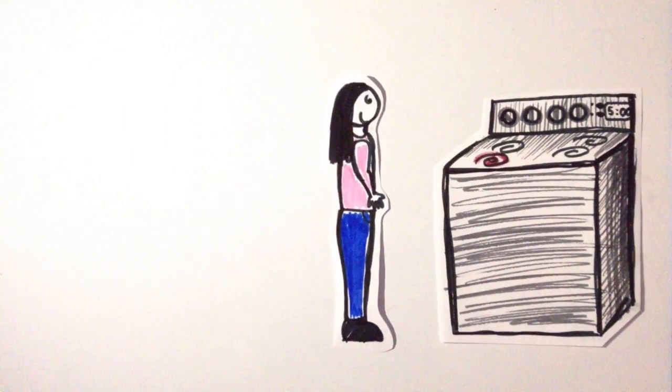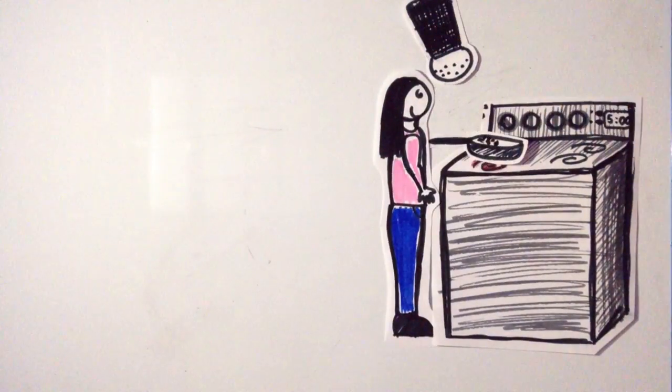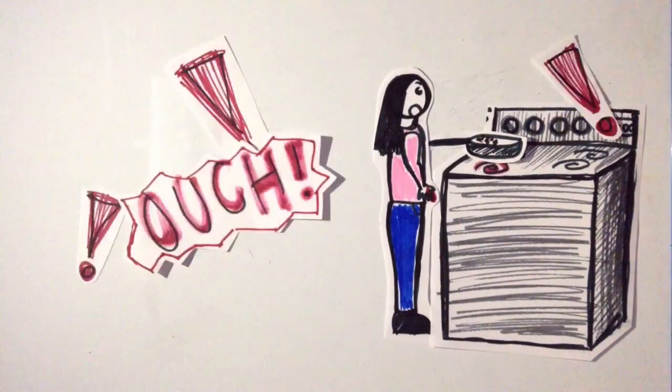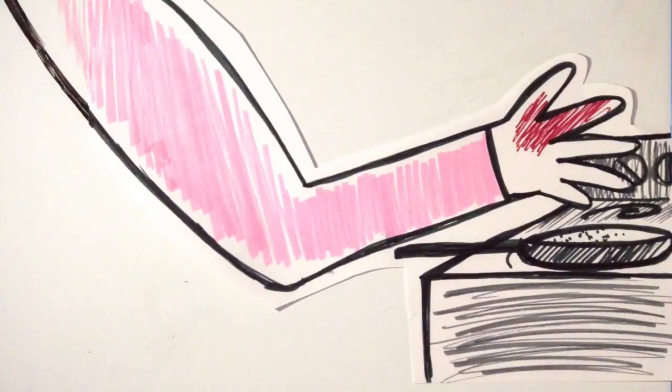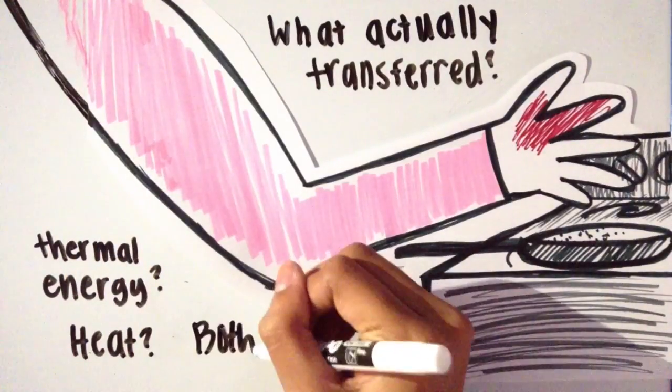Say you're cooking on your stove and reach over to grab some salt to put in your dish. You accidentally hit the rim of the pan and ouch! The sudden burst of hot temperature left a red patch on your hand. What actually transferred to your hand? Thermal energy or heat? Can they both actually be transferred?